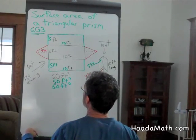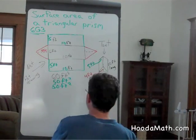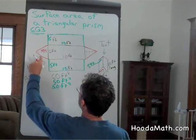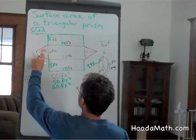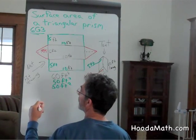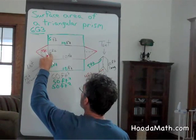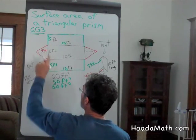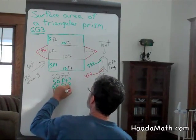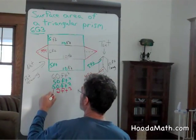And then the front and the back are triangles. They are four by six, but the area of a triangle is one-half the base. One-half of six, which is three, times four, which is twelve. And of course, the back is the same.